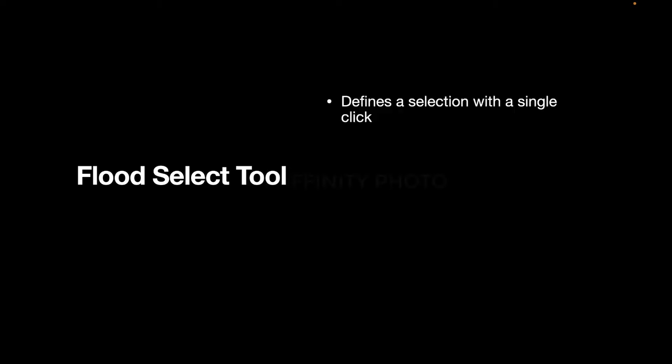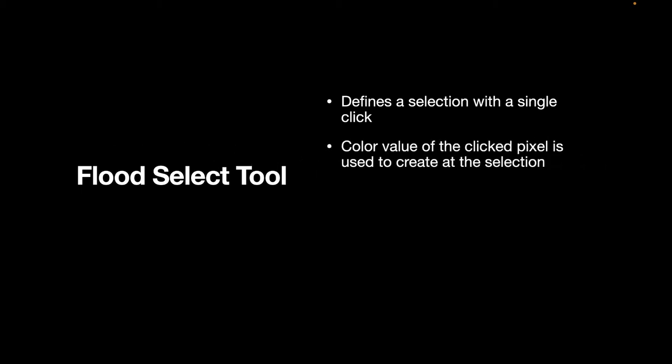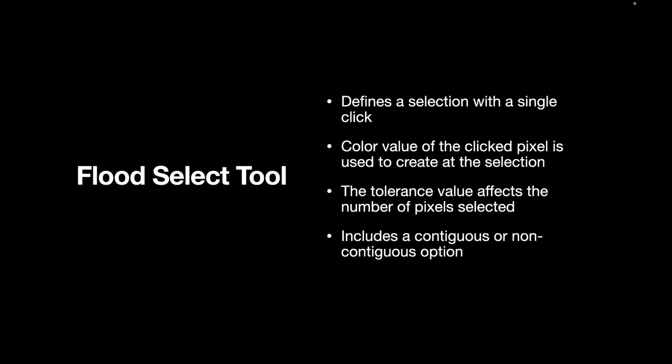The next tool is the flood select tool. A flood select tool defines a selection with a single click. Unlike the selection brush where you have to drag the brush around to define your selection, the flood select tool just uses a single click. It bases its selection on the color value of the clicked pixel. It also has a tolerance value which affects the number of pixels selected, and includes a contiguous or non-contiguous option.